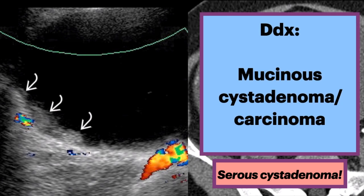In terms of the differential, the main consideration is a mucinous cyst adenoma or cyst adenocarcinoma. These are typically multilocular, rather than unilocular.